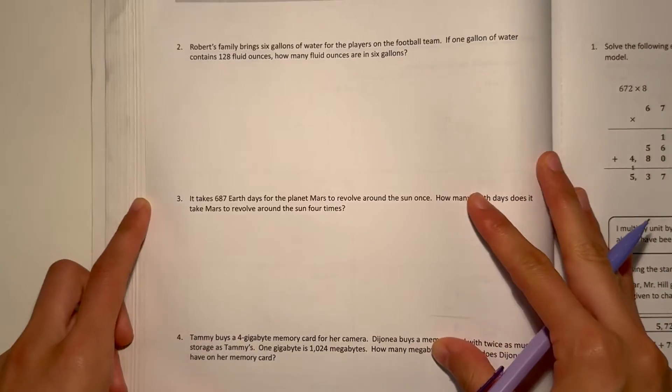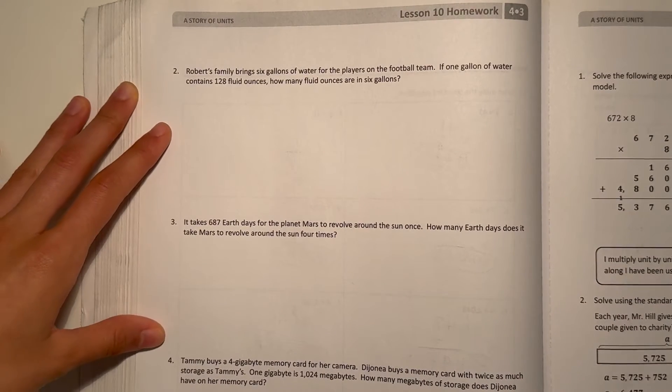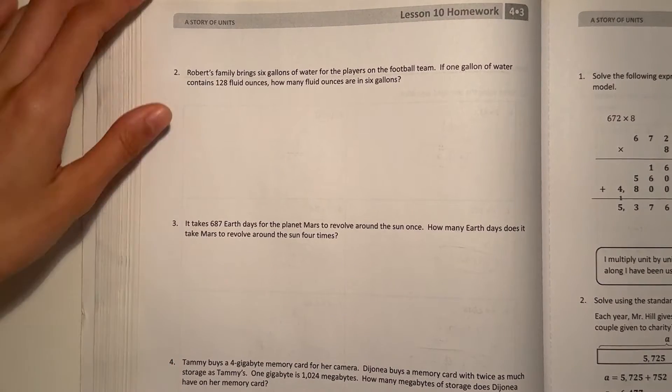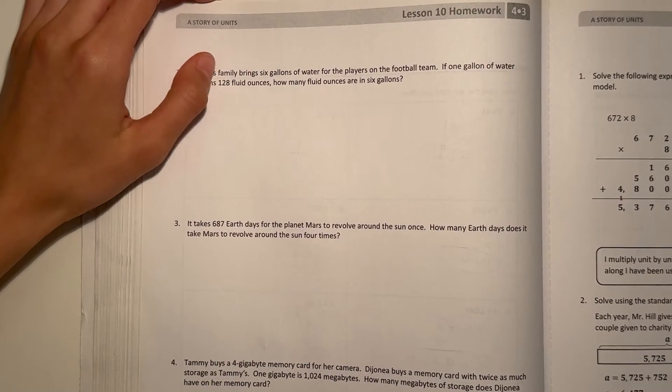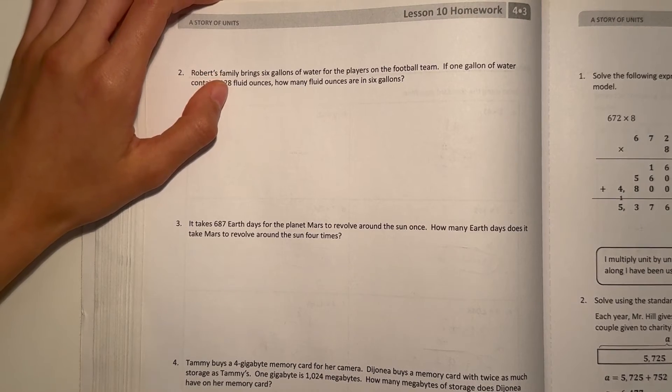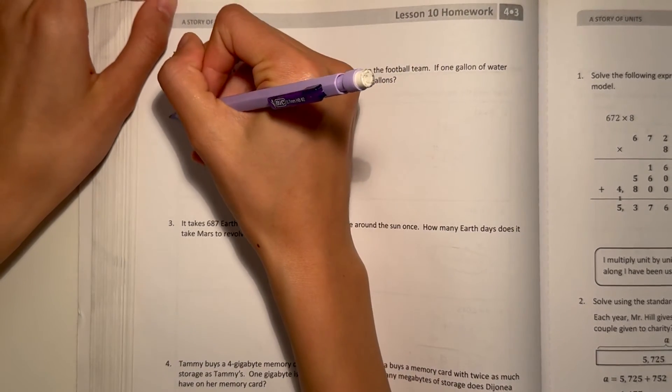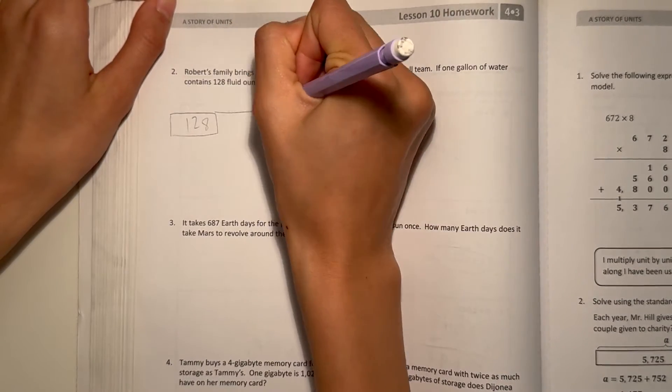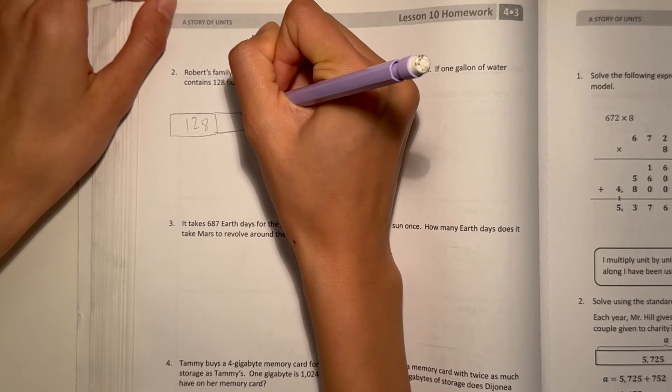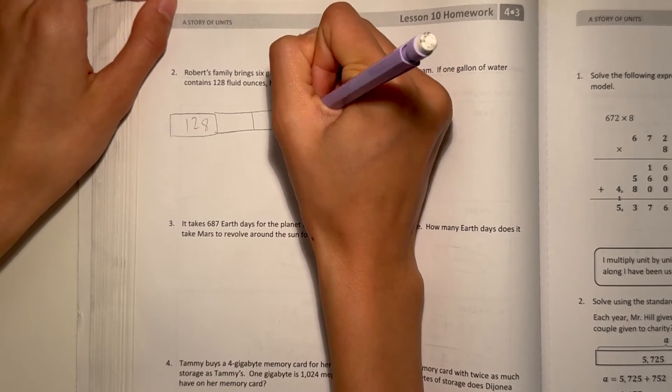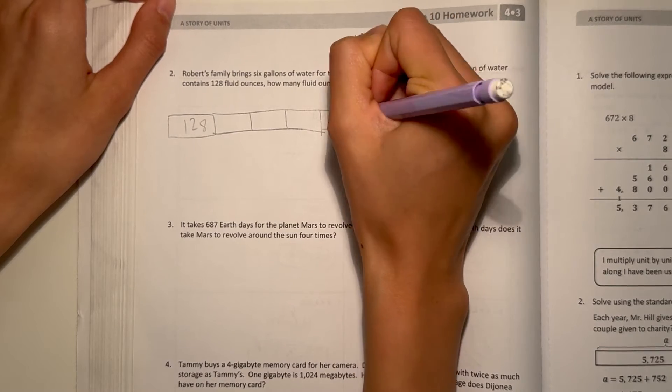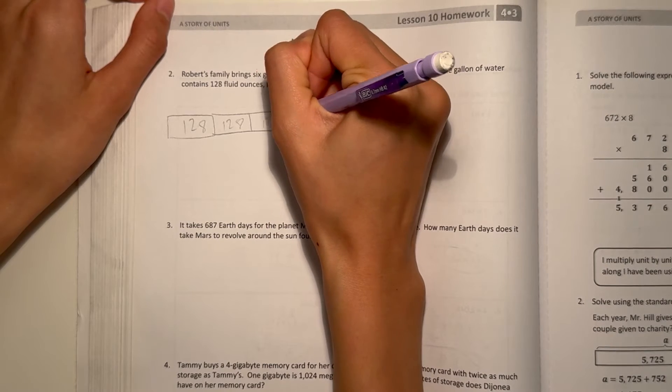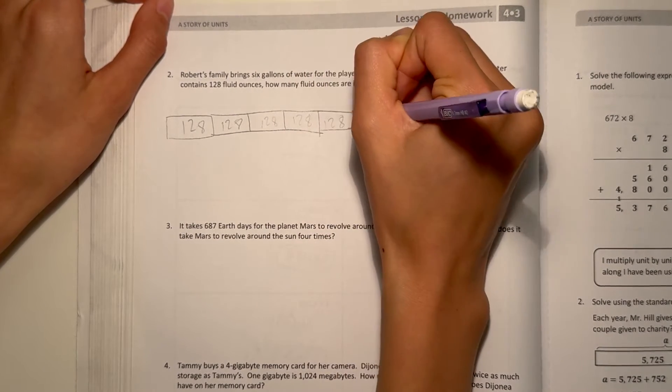Next page. Robert's family brings 6 gallons of water for the players on the football team. If 1 gallon of water contains 128 fluid ounces, how many fluid ounces are in 6 gallons? Alright, so let's see. 1 gallon of water is 128. So how many are in 6? Let's do a tape diagram.